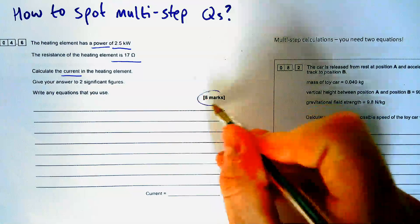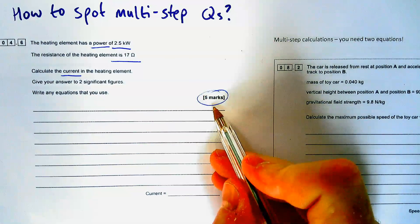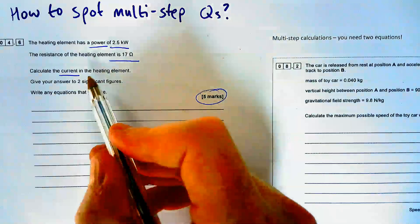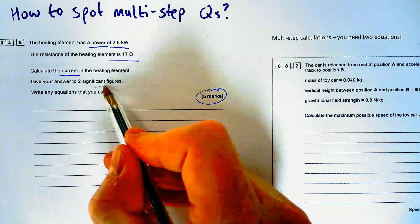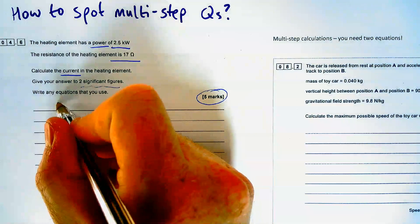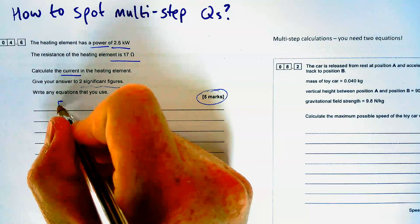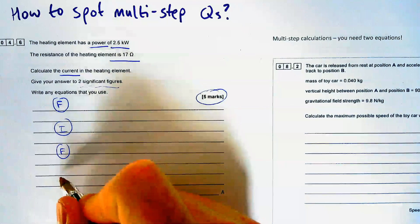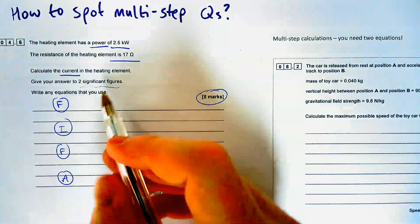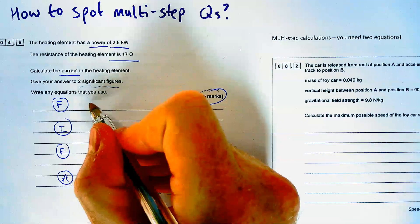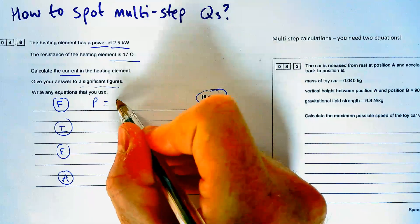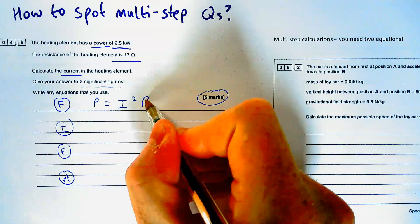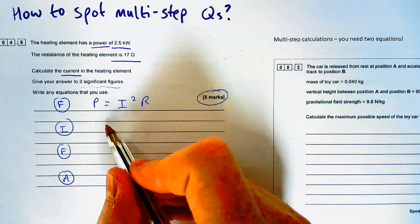The thing that catches people out is the fact that it's five marks. However, it's five marks because there's a conversion and it's to two significant figures. To follow through with this, if you don't do this already please start — we're going to use the FIFA method. My F stands for formula, so the equation I'm going to use is power equals I squared times by R, from your equation sheet.